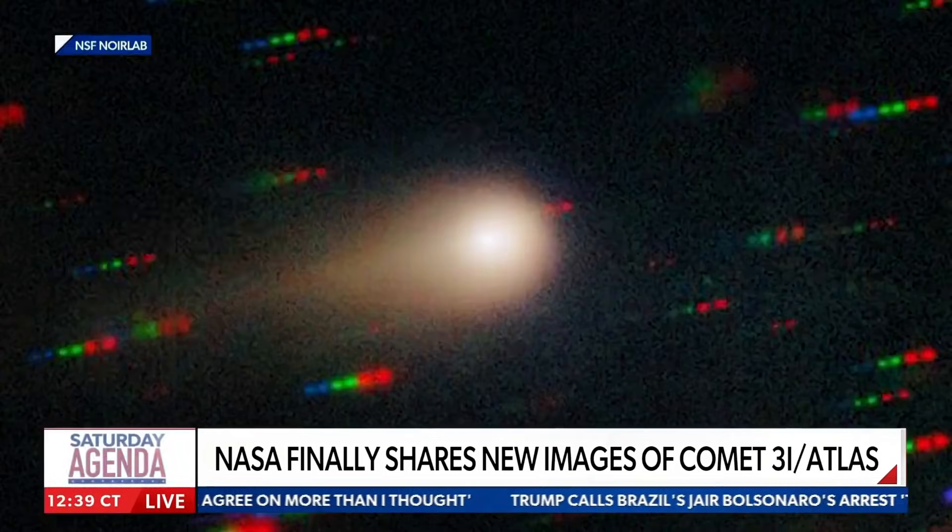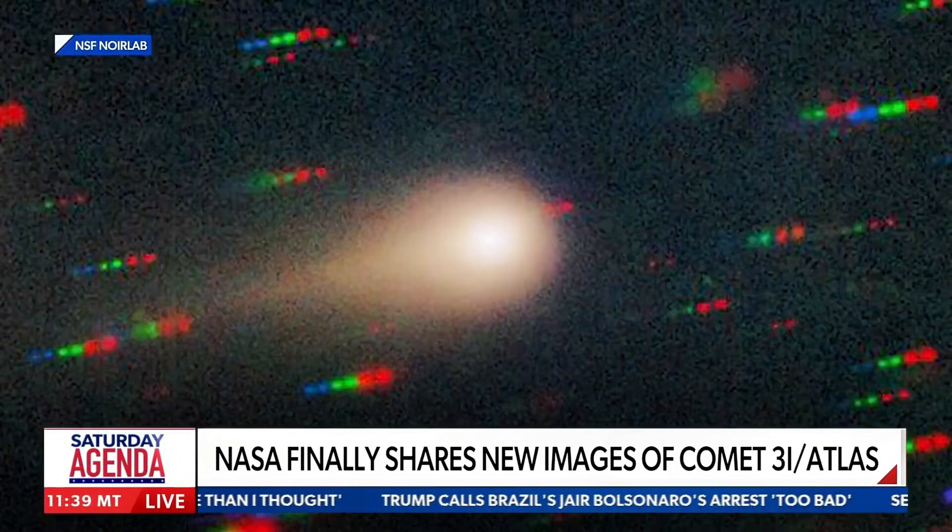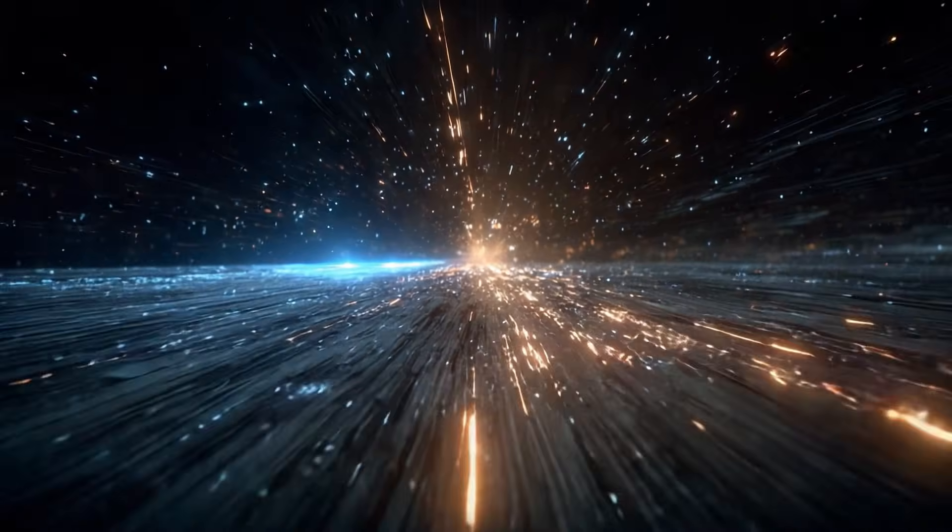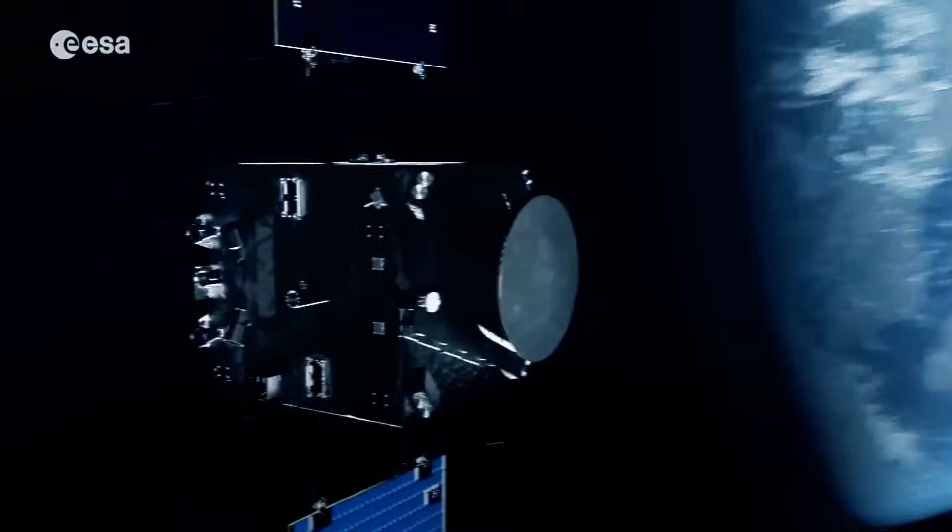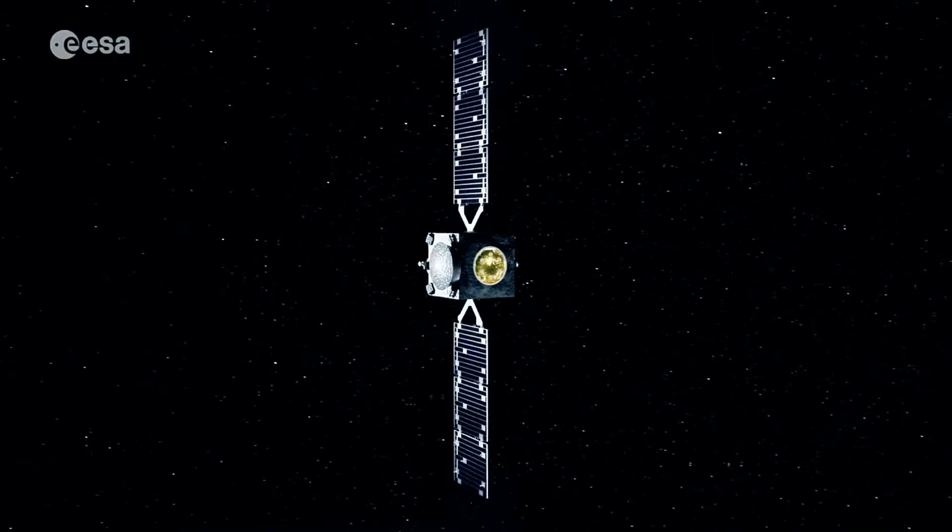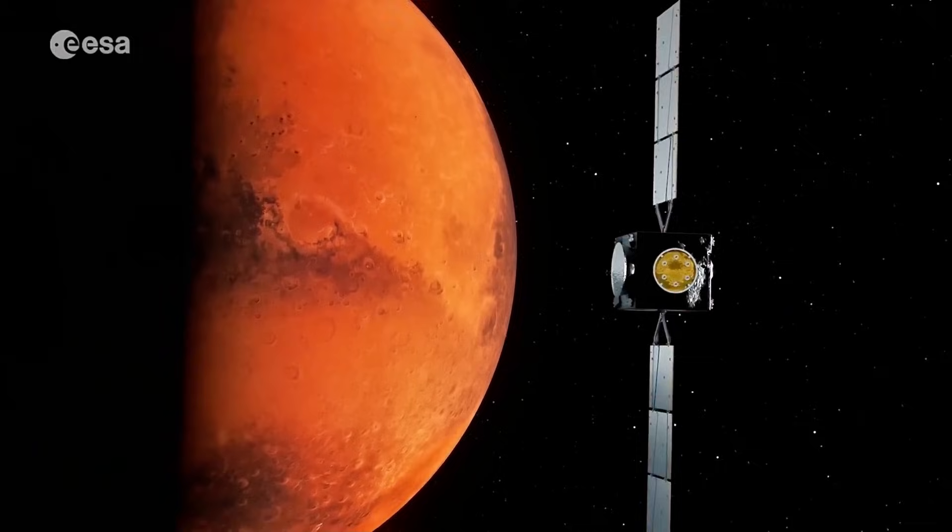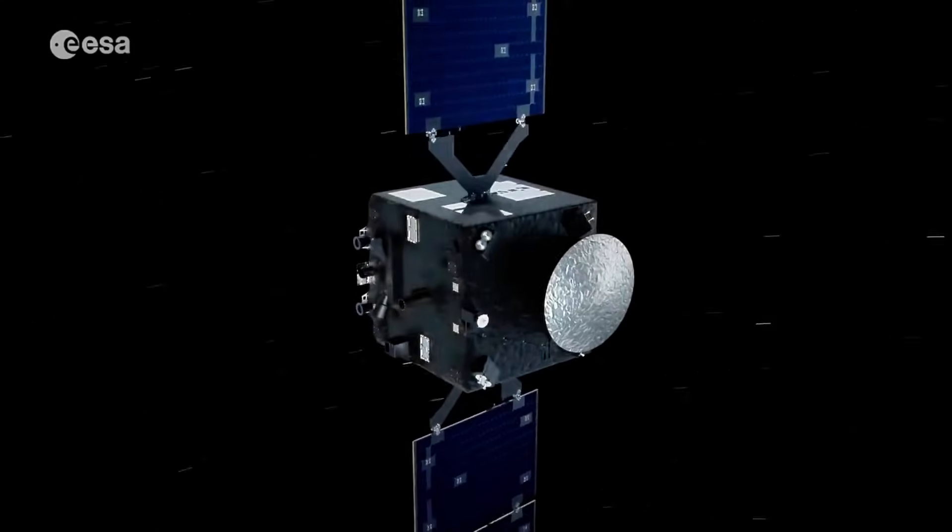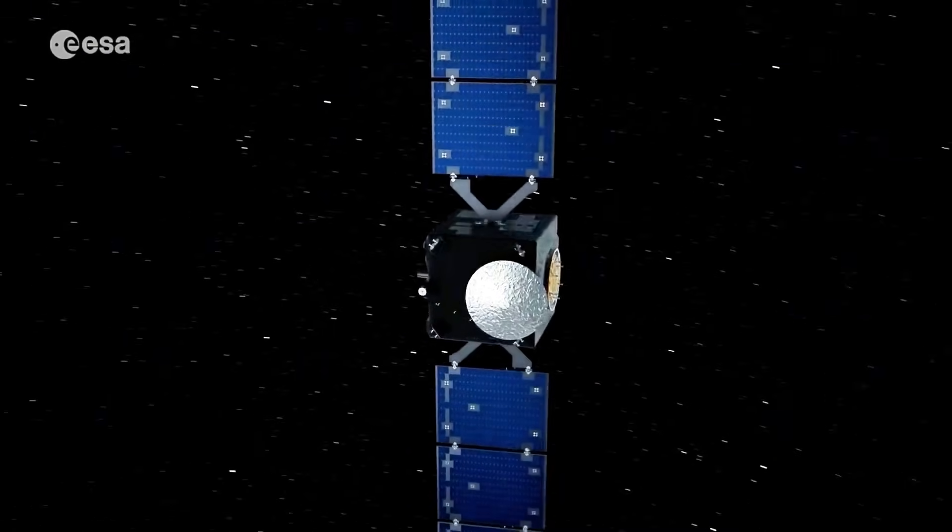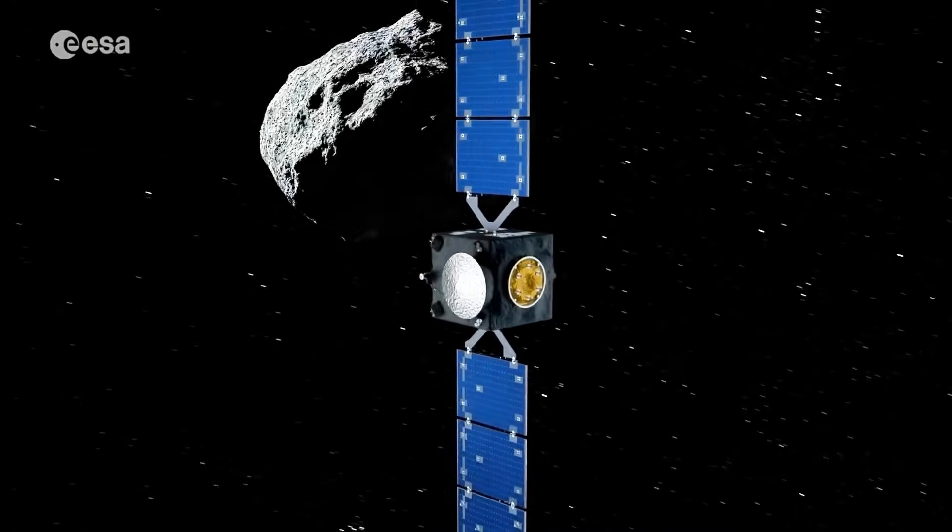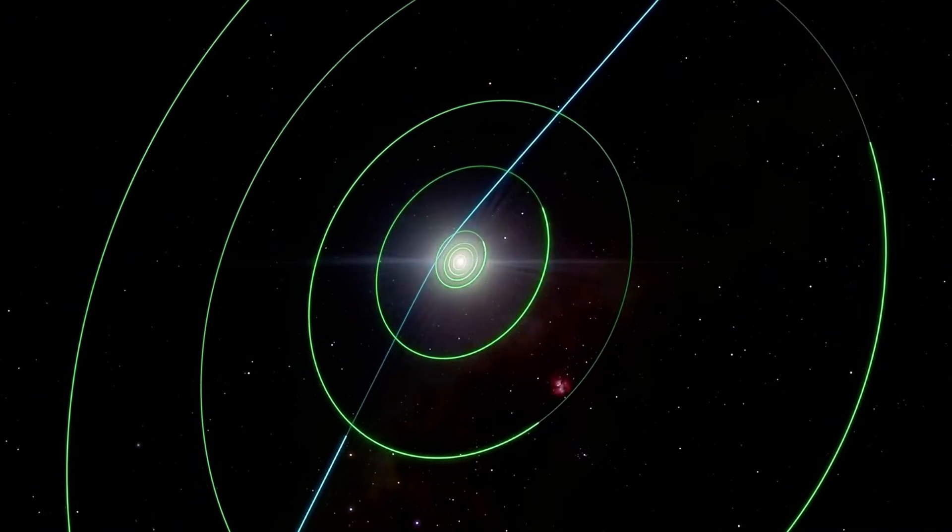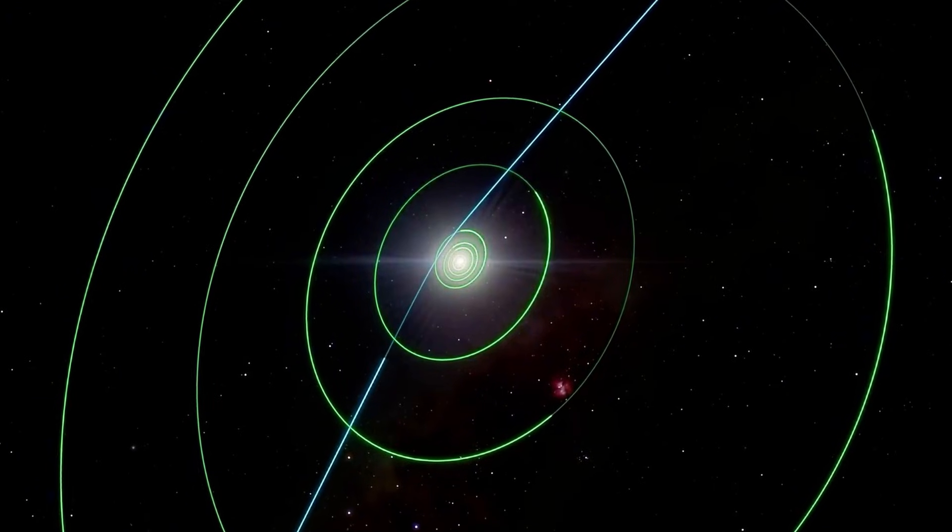Initial observations showed red color. Deep red. Organic compounds dominant. Like trans-Neptunian objects. Like Kuiper belt residents. But composition proved exotic. Chemical signatures wrong for solar system formation. Elements in unusual ratios. Molecules unknown locally. Clear evidence of alien stellar environment. Formation around different star with different abundances, different conditions, different chemistry.